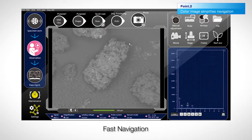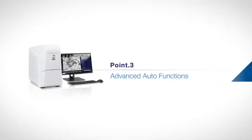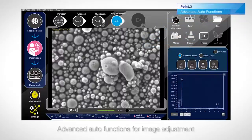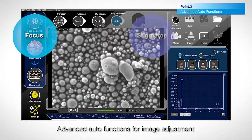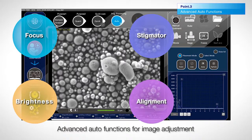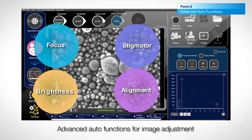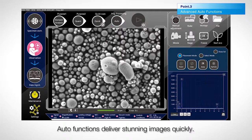The JCM-7000 includes advanced auto functions for fast optimization of the SEM image. Auto functions include focus, stigmator, brightness, and alignment. Operators at any experience level will appreciate how quickly images can be acquired with these auto functions.